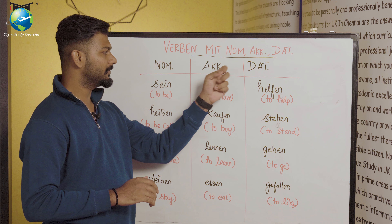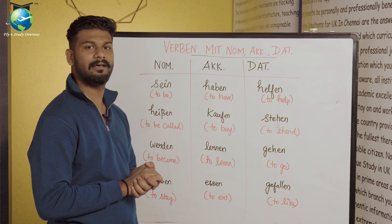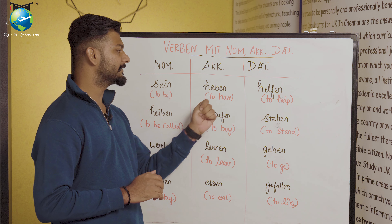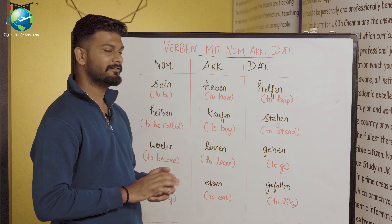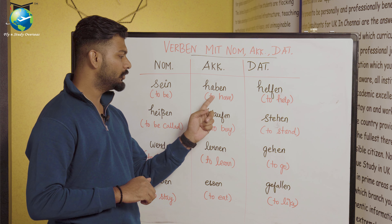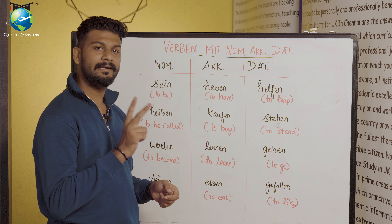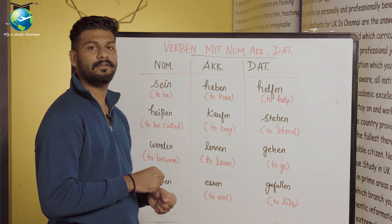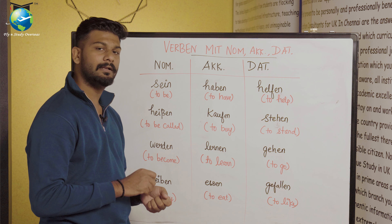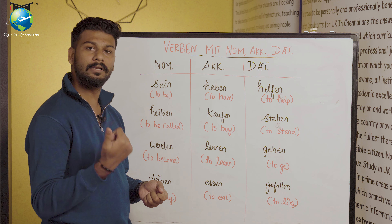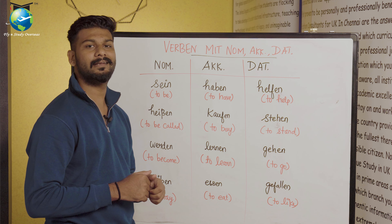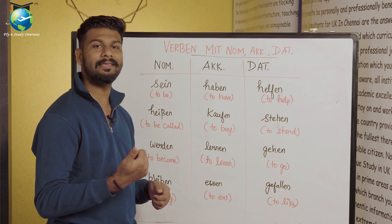Now we will go to accusative. In accusative case, there are 4 verbs. The first verb is haben, meaning 'to have.' The second verb is kaufen, meaning 'to buy.' The third verb is lernen, meaning 'to learn.' The fourth verb is essen, meaning 'to eat.'